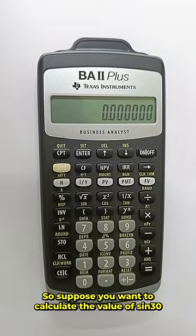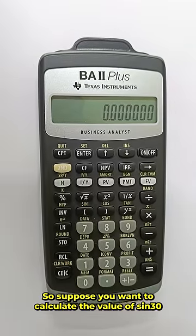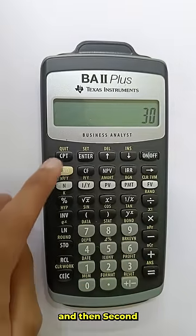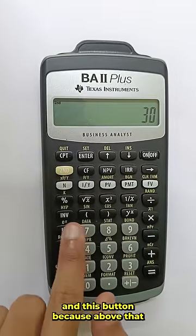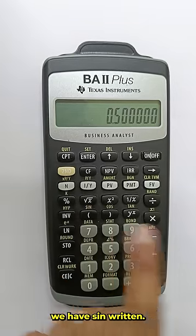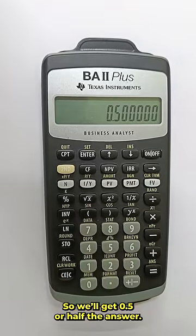Suppose you want to calculate the value of sin 30 or sin 30 degrees. For that you will press 30 and then second and this button because above this we have sin written. So we get 0.5 or half as the answer.